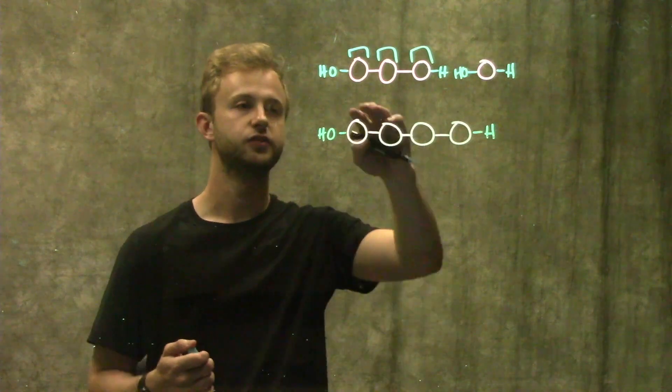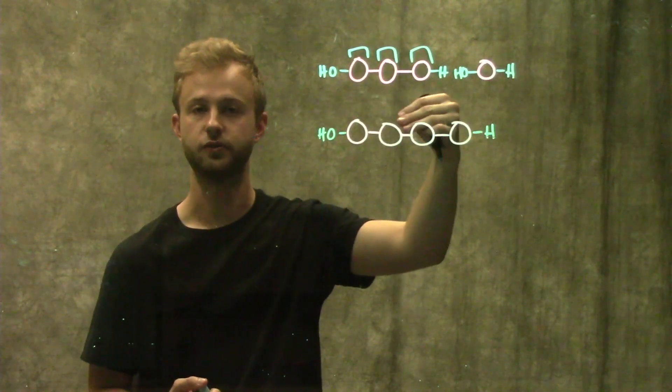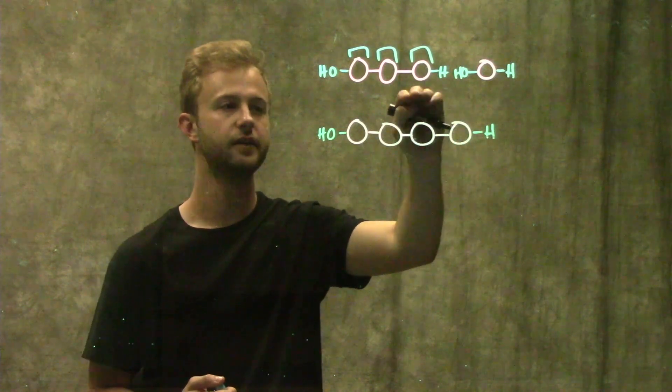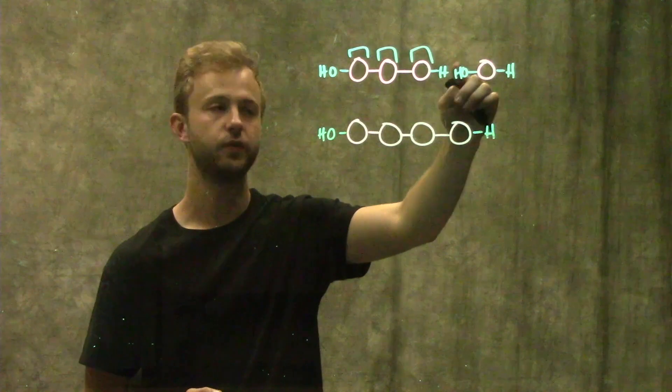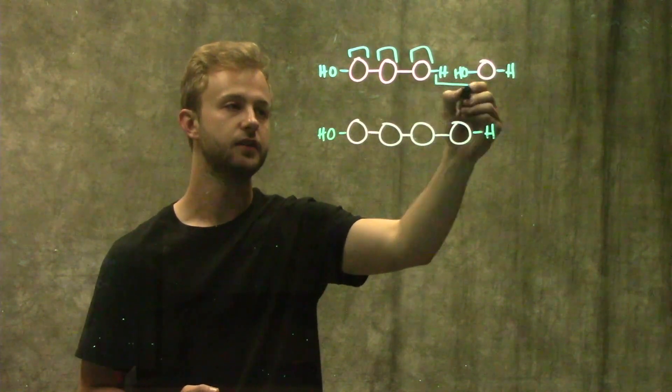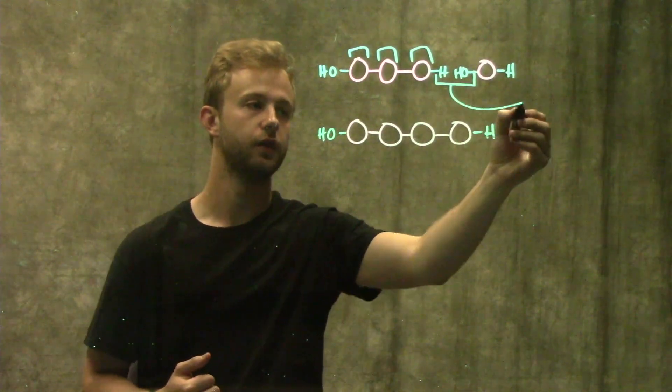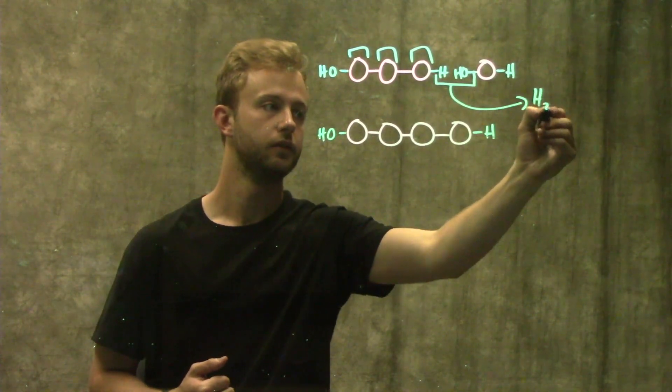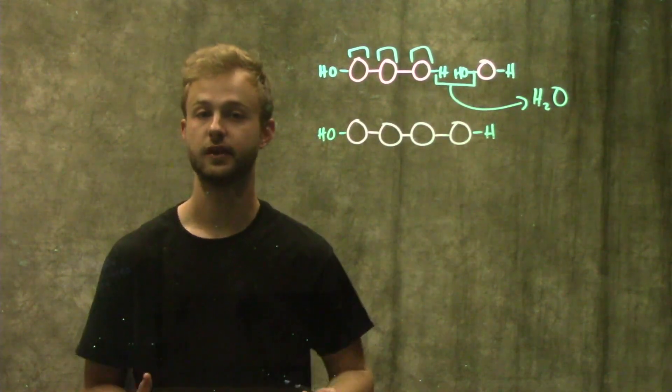To demonstrate how that happens, we have this small string of monomers right here and we're going to add one more to it. On the end of this molecule we have a hydrogen, and on the end of this monomer we have a hydroxyl group. What will happen is these two will come together to make a water molecule that will then leave, and that allows this whole thing to be connected together.